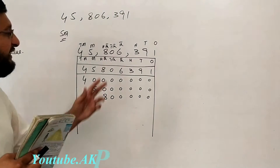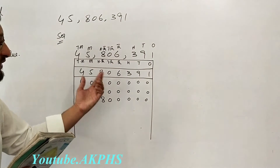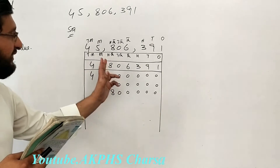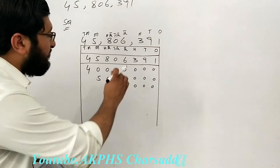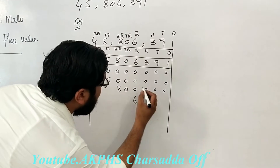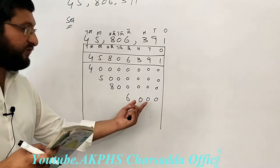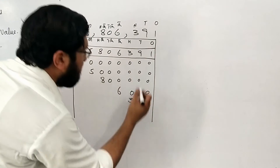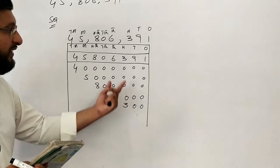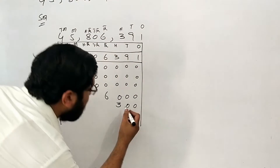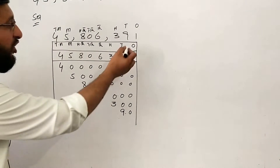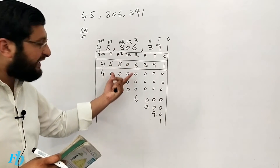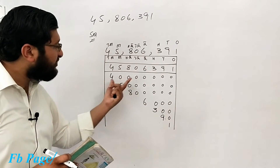This is the expanded form. For the thousands place: 6 gives us 6,000. For the hundreds place: 3 gives us 300 — that is 3 with two zeros. Then 9 is in the tens place and 1 is in the ones place, giving us 90 and 1 respectively. That completes the expanded form for 45,806,391.